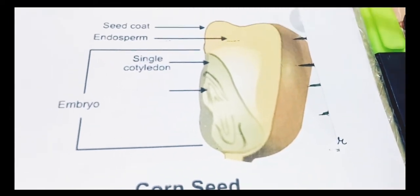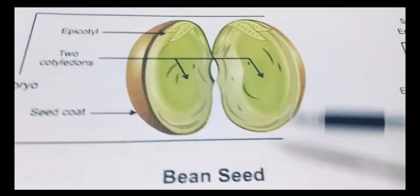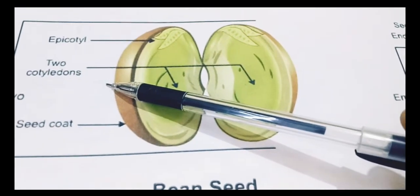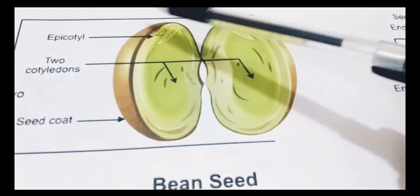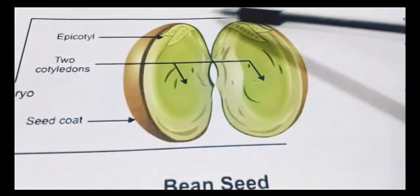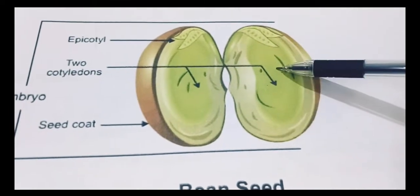Now what are the other type of seed? That is the dicot seed. As in the bean seed, you can see it is having two leaf, two cotyledons, and that's why it's a dicot. Di means two, cot cotyledon, short form cot. So dicot seed. It also stores the baby plant in it.